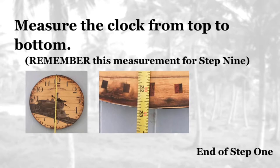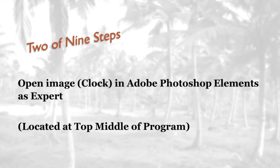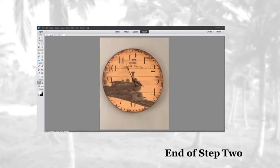Step two: measure the clock from top to bottom — we're going to use this measurement in step nine. What we are going to be creating in the next six steps is what you see on this screen. On the left you'll see the photo that you took, and on the right side will be what we call a transparent canvas. Make sure that you open up Photoshop Elements as an Expert — you can locate that at the top of the program above the clock face. There are four words; the one in black that says 'Expert' is what you'll be looking for.